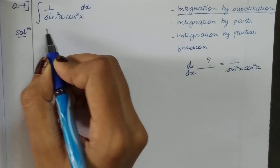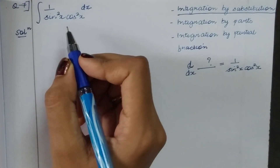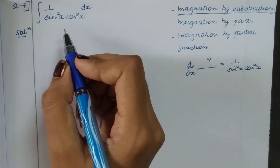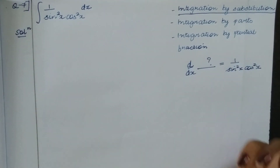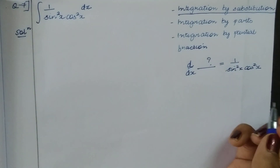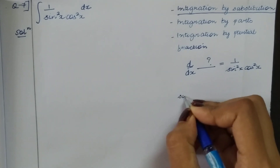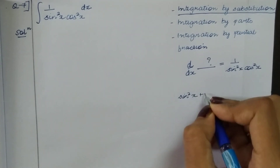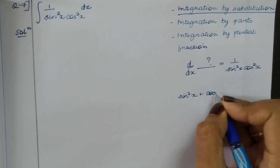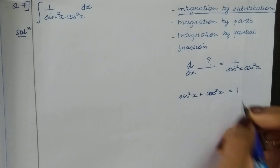Here the denominator is sin square x and cos square x. We will use trigonometry. The identity is: sin square x plus cos square x is equal to 1.